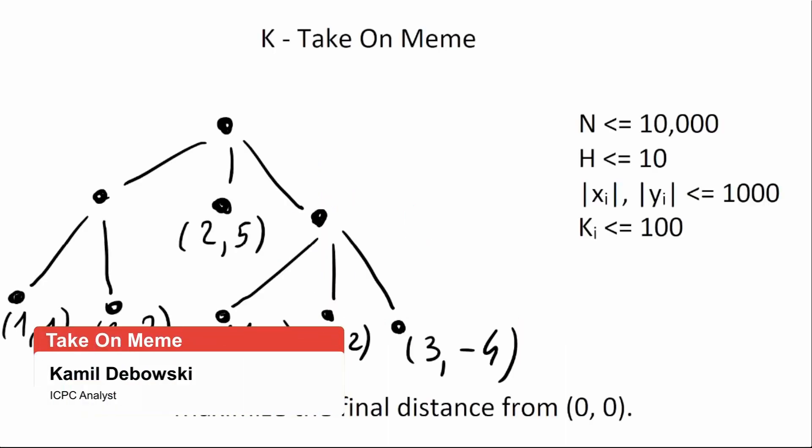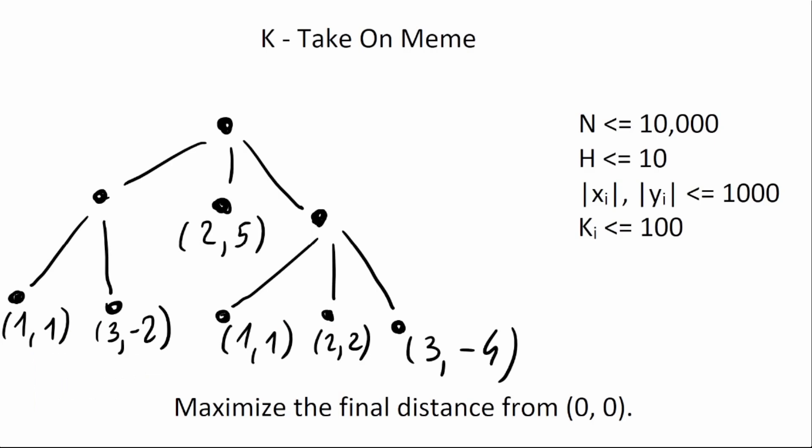Erich Tohir talking about problem K, take on meme. We are given a lot of points in leaves of a tree and this tree describes a tournament between memes.